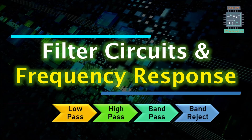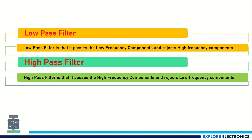We have four different filter circuits: low-pass filter, high-pass filter, band-pass filter, and band-reject filter. In this video, let us discuss low-pass and high-pass filters and their frequency responses.